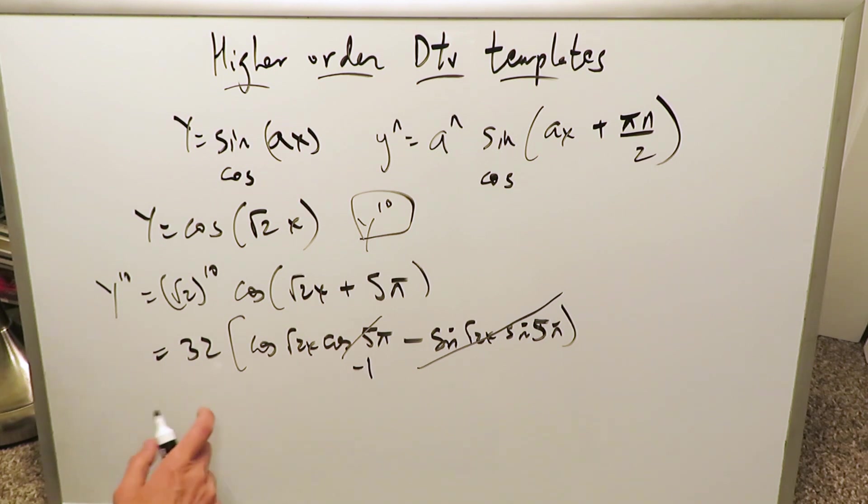This minus 1 can move itself at the very beginning. Your 10th order derivative for this function right over here would be minus 32 cosine √2x and that would be your answer. And it wasn't too hard.